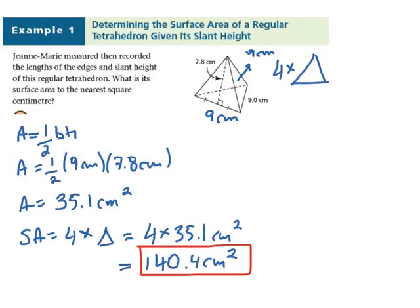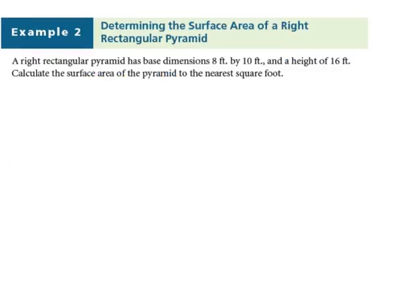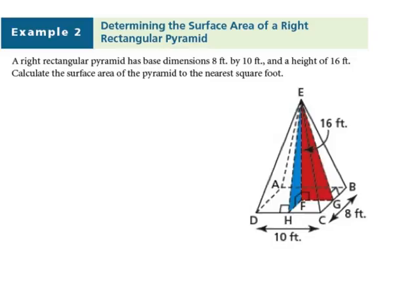Let's look at another example: determine the surface area of a right rectangular pyramid with base dimensions 8 feet by 10 feet and a height of 16 feet, to the nearest square foot. The 8 by 10 feet refer to the rectangular base; the height of 16 feet is perpendicular from the base to the apex. None of these numbers represent the slant height needed for the surface area, so we must first find the slant heights of the blue and red triangular faces.